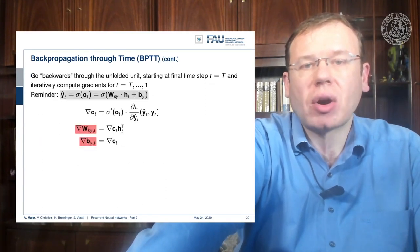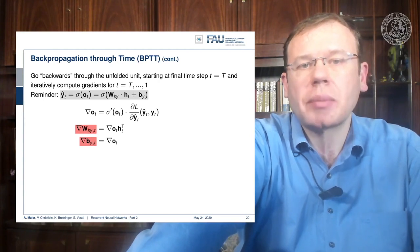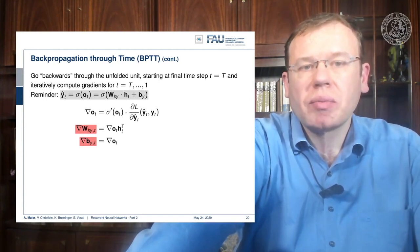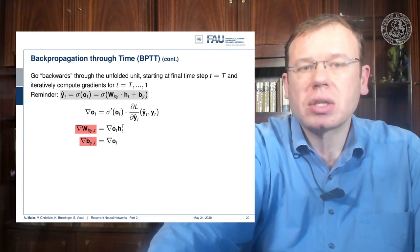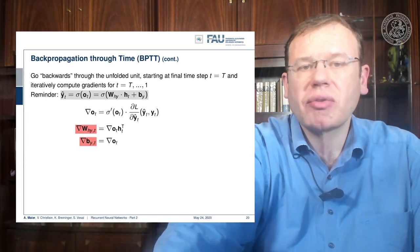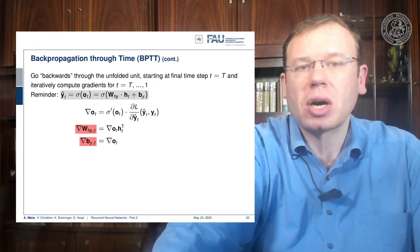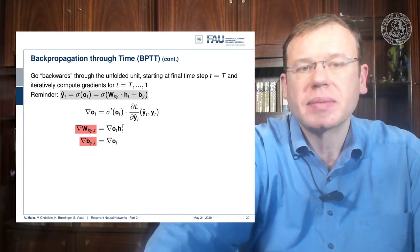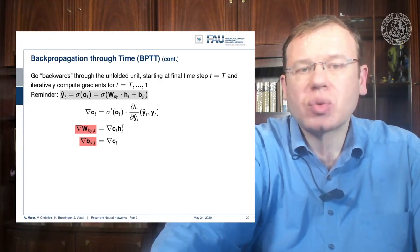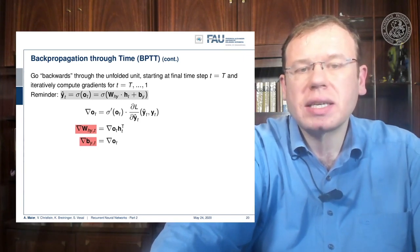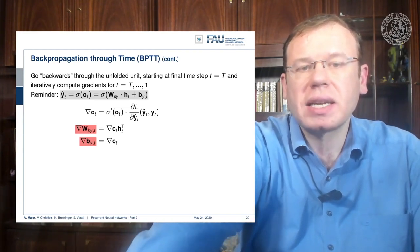We start at time t equals capital T and iteratively compute gradients down to t equals one. Our ŷ is produced by the sigmoid of ot, composed by two matrices. The partial derivative with respect to ot requires the derivative of the sigmoid of ot times the partial derivative of the loss with respect to ŷt. The gradient with respect to W_hy is the gradient of ot times ht transpose, and the gradient with respect to the bias is simply the gradient of ot.